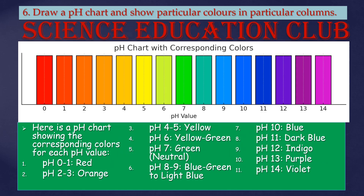Draw a pH chart and show particular colors in the particular columns. The colors from 0 to 14 are: pH 0–1 red, 2–3 orange, 4–5 yellow, 6 yellow-green, 7 green (neutral), 8–9 blue-green to light blue, 10 blue, 11 dark blue, 12 indigo, 13 purple, 14 violet.